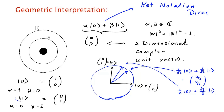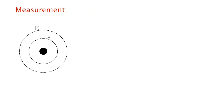Ket |1⟩ is another way of writing the unit vector orthogonal to |0⟩. There's something very nice about ket notation for quantum computation: it acknowledges that a quantum bit is on one hand a bit encoding zero or one, and on the other hand a more complex object — a superposition of zero and one. So this notation expresses both aspects simultaneously.